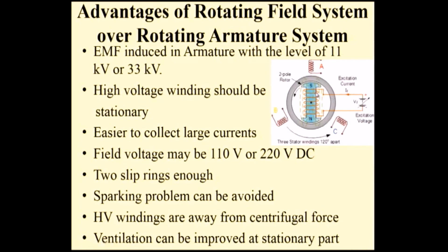Another important advantage: in a three-phase alternator, only two slip rings are needed if the field is rotating. If the armature were rotating, we would need three slip rings to collect electrical energy. With the rotating field, only two slip rings are needed — one for positive supply and one for negative supply — to provide DC to the field system. There is also less sparking problem: if the armature were revolving, you would have to collect 11,000 volts through the slip ring and brush assembly, causing sparking. With the rotating field carrying only 110–220 volts, the sparking problem is greatly reduced.